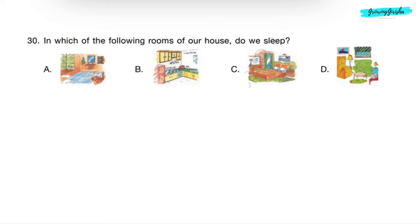Question 30: In which of the following rooms of our house do we sleep? Option A is bathroom where we take a bath. Option B shows kitchen where we cook food. Option C is bedroom where we sleep. So correct answer is option C. Option D is living room where we attend our guests.